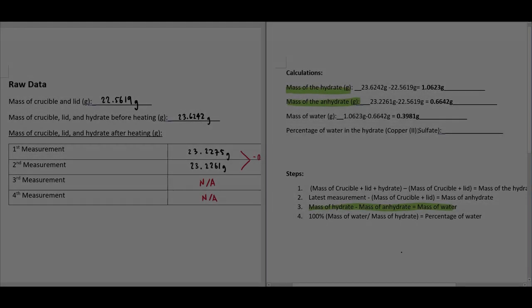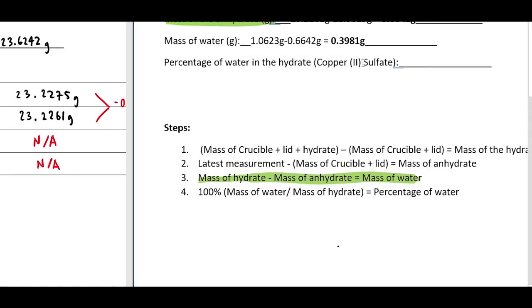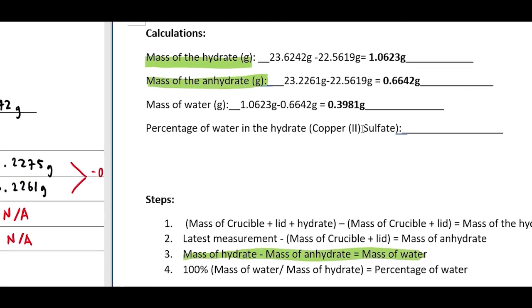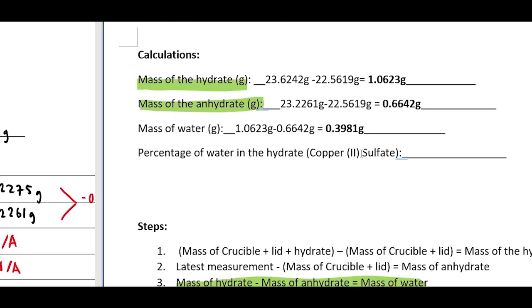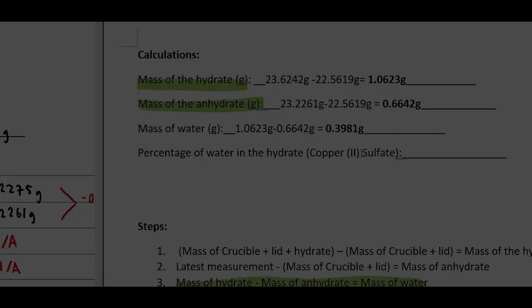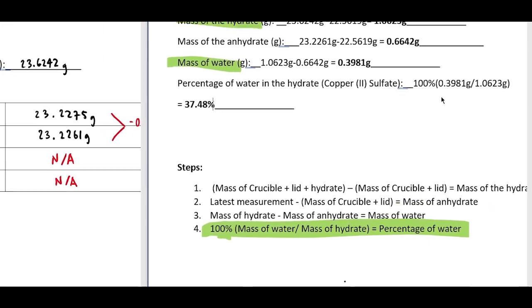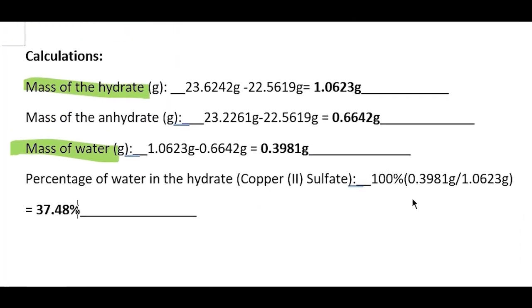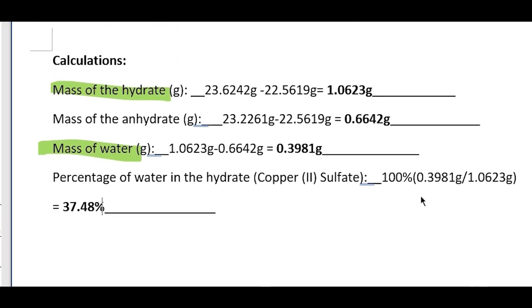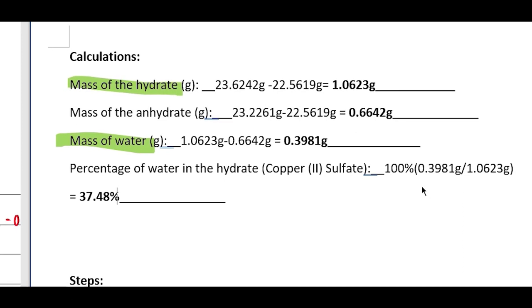Then, solve the mass of water in the hydrate. Subtract the mass of the anhydrate from the mass of the hydrate. Lastly, calculate the percentage of water. You can do this by dividing the mass of water by the mass of the hydrate you found from step 1.